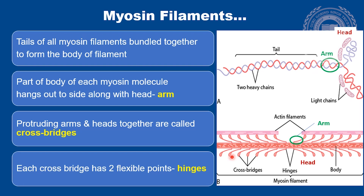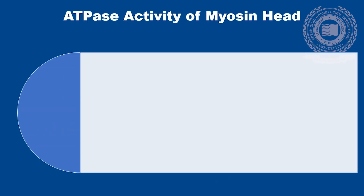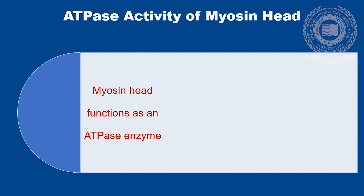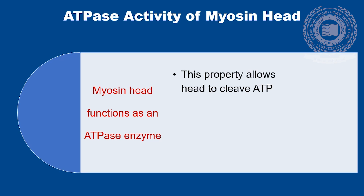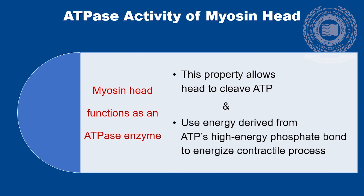Each cross bridge has two flexible points called hinges. One hinge is present at the junction between the arm and the body, and the other hinge is present between the arm and the head. Another very important aspect is that the myosin head functions as an ATPase enzyme, and this property allows the head to cleave the ATP and use the energy derived from ATP's high energy phosphate bond to energize the contractile process.